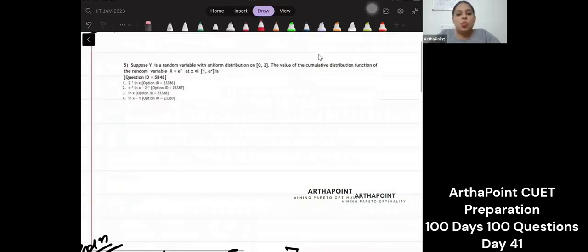This is y is a random variable uniformly distributed on 0 to 2. The value of cumulative distribution function of random variable x is equal to e to the power y when x belongs to 1 to e square.